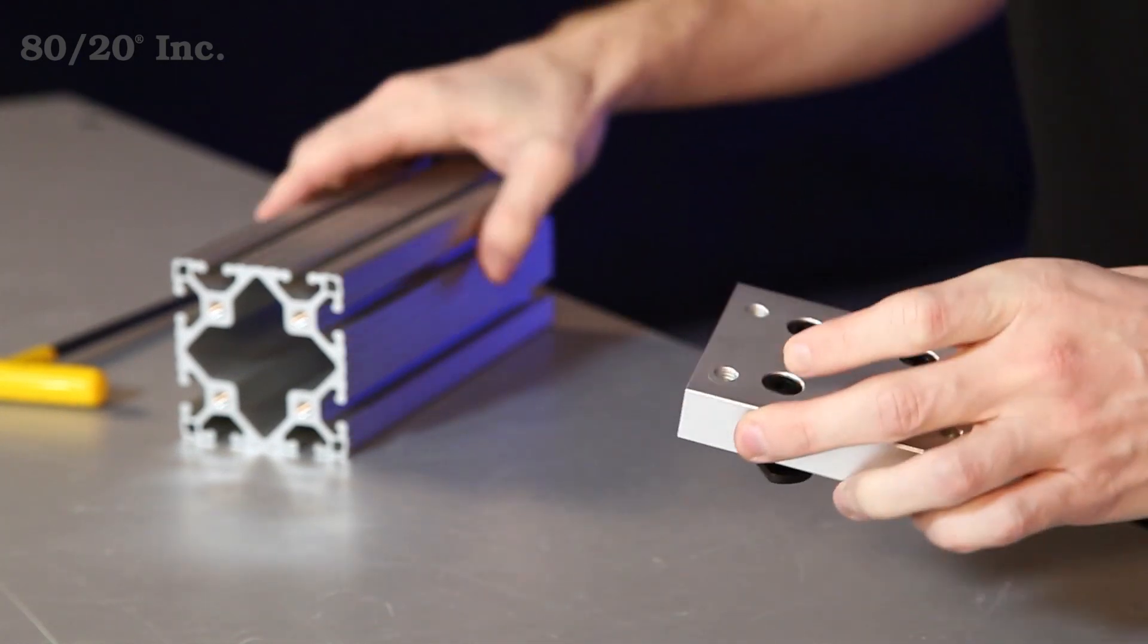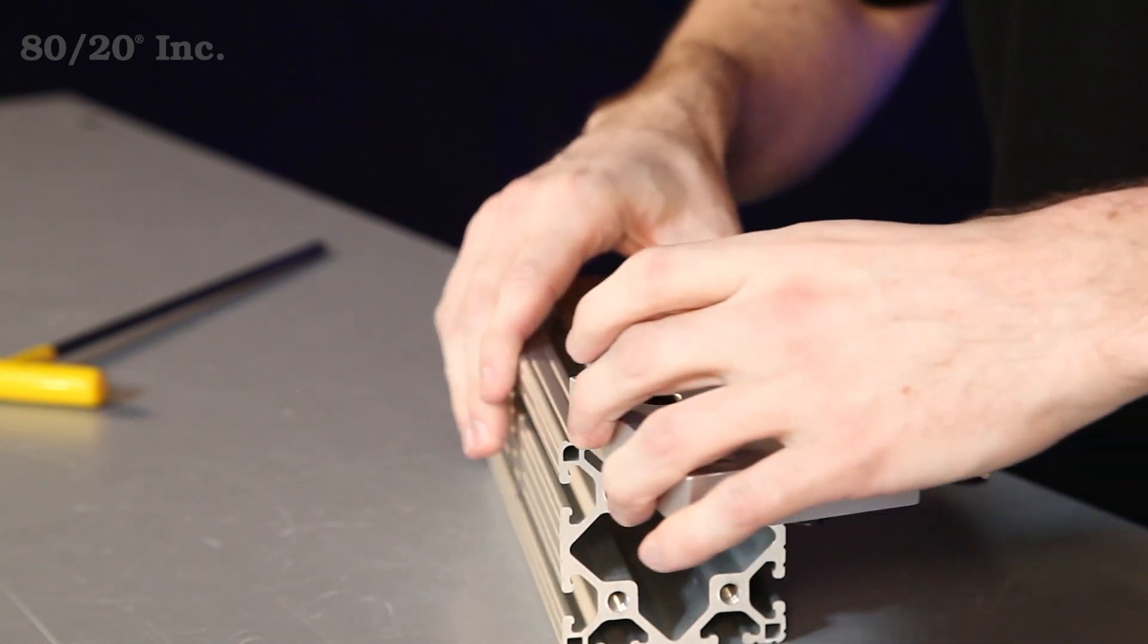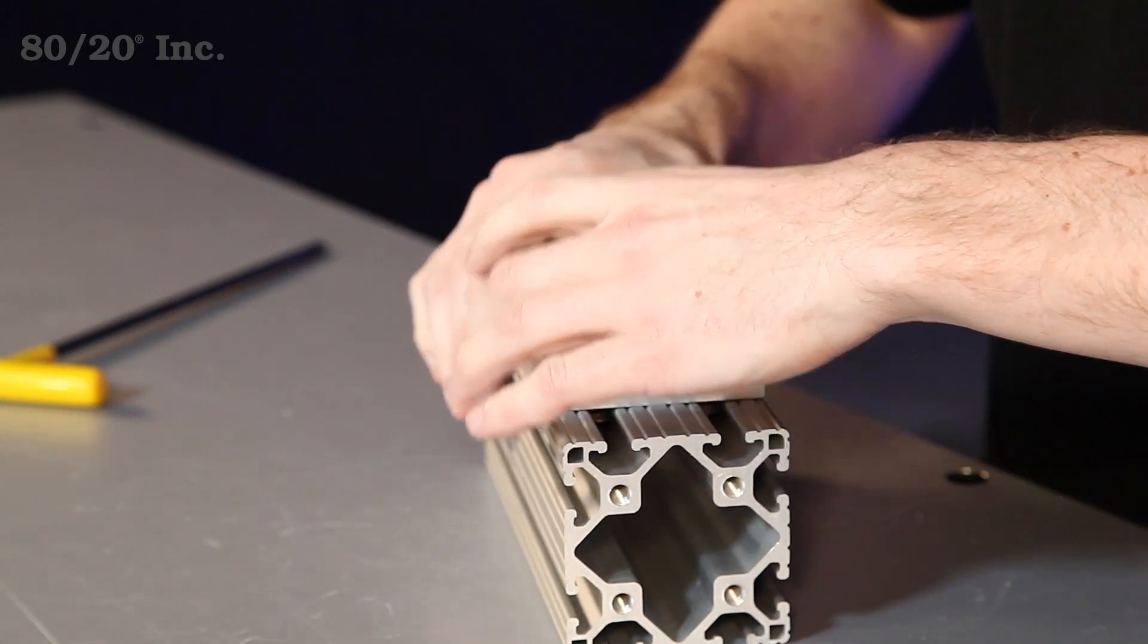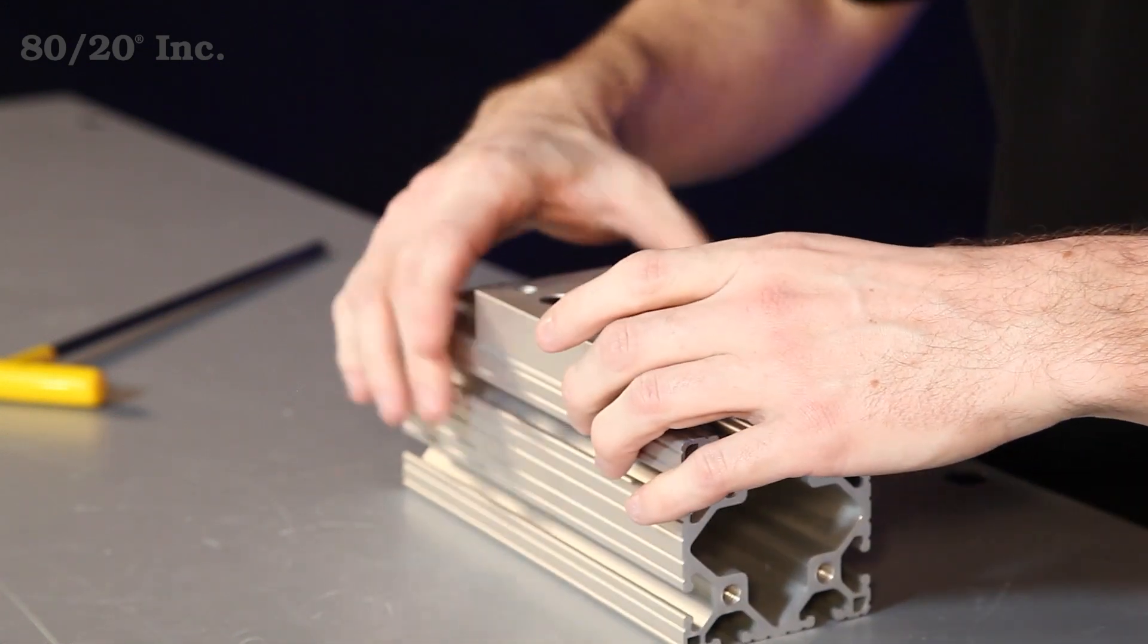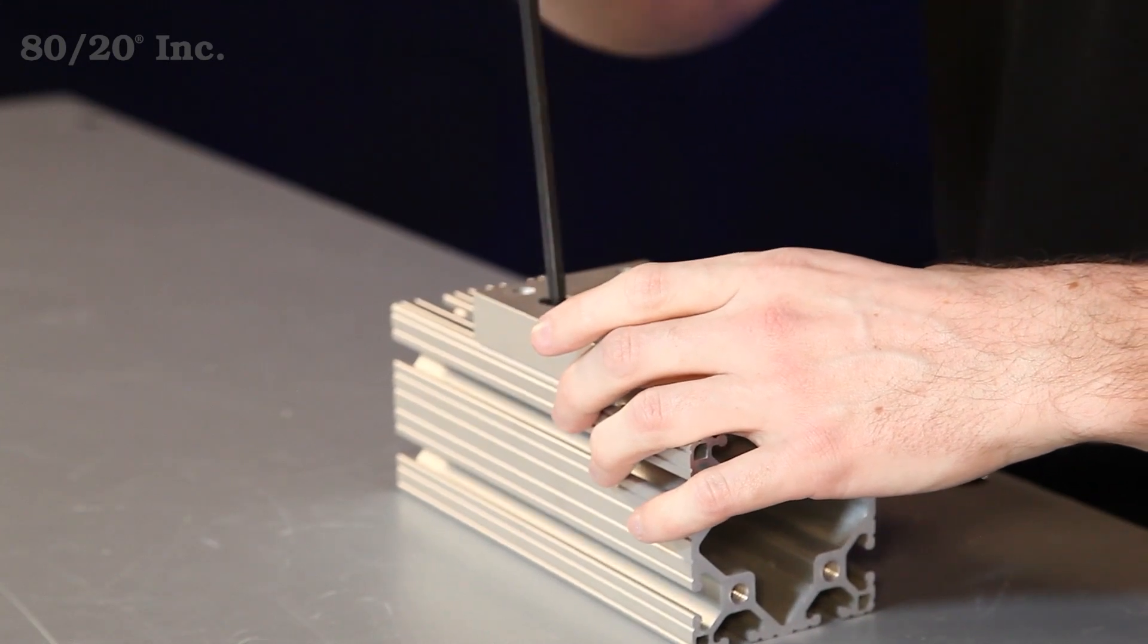So once we have that on there, we'll take our profile, slide our base plate right on it, find the location that we want, and tighten down our bolts with our wrench.